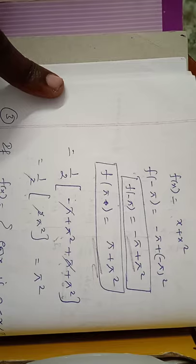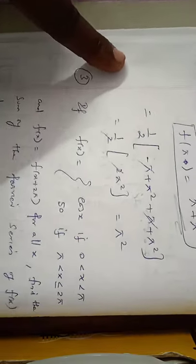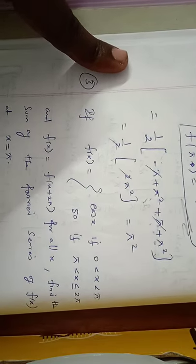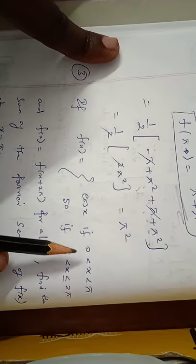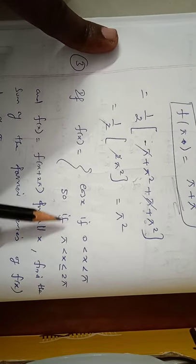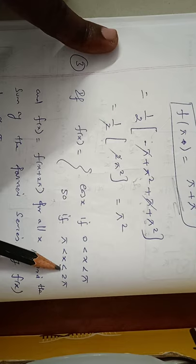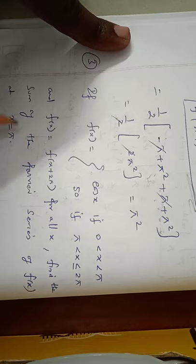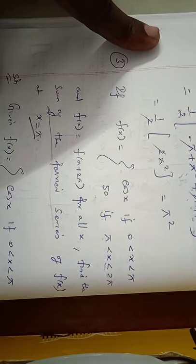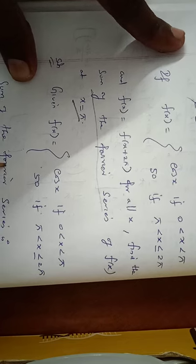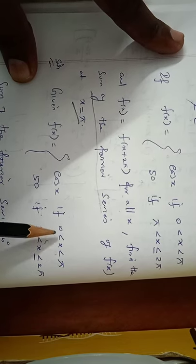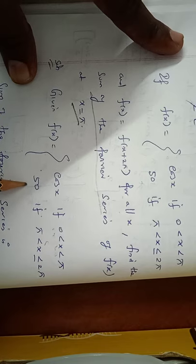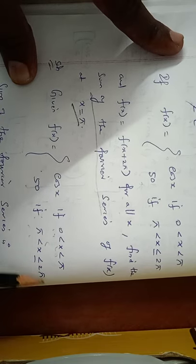Problem 3: if f(x) = cos x for 0 < x < π, and f(x) = 50 for π < x ≤ 2π, and f(x) = f(x + 2π) for all x, find the sum of the Fourier series of f(x) at x = π. The sum of the Fourier series formula is (1/2)[f(π⁻) + f(π⁺)], where f(π⁻) uses the first piece (x in 0 to π) and f(π⁺) uses the second piece (x in π to 2π).